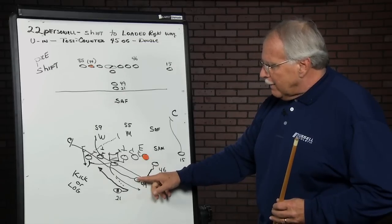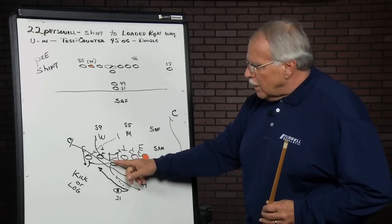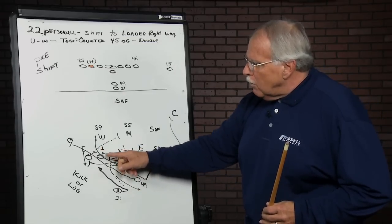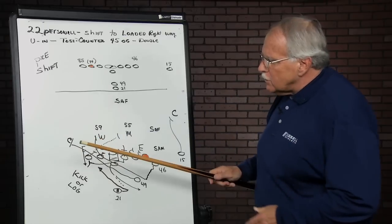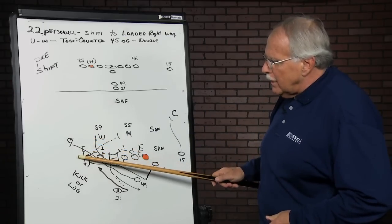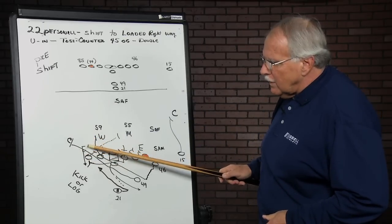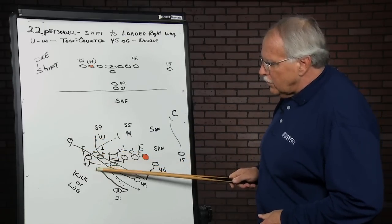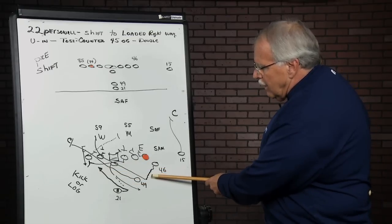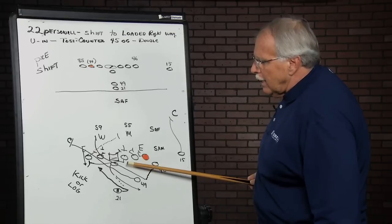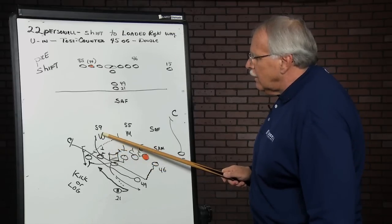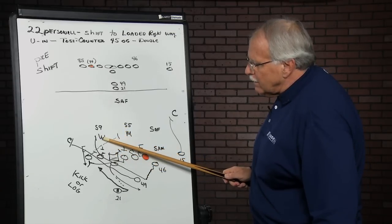In the meantime, the fullback will come right through underneath the quarterback, and he will be looking to block the first force man, which is normally the corner, inside or outside of the defensive end. He's in coordination with the guard. Walker, the tight end, will now come around, and he will seal anything that comes back from inside out.